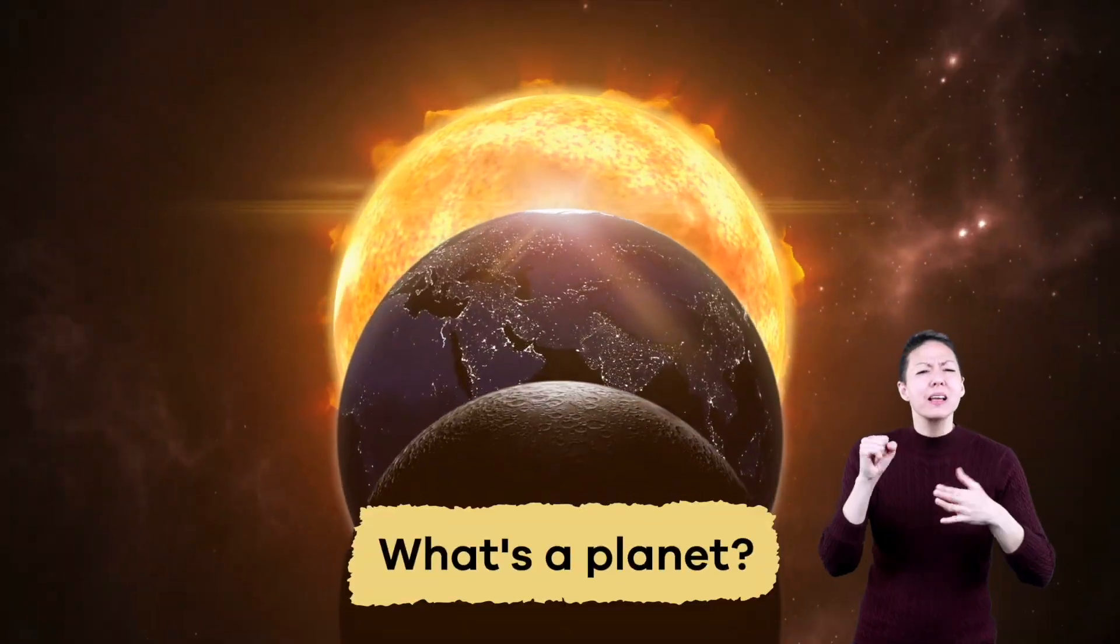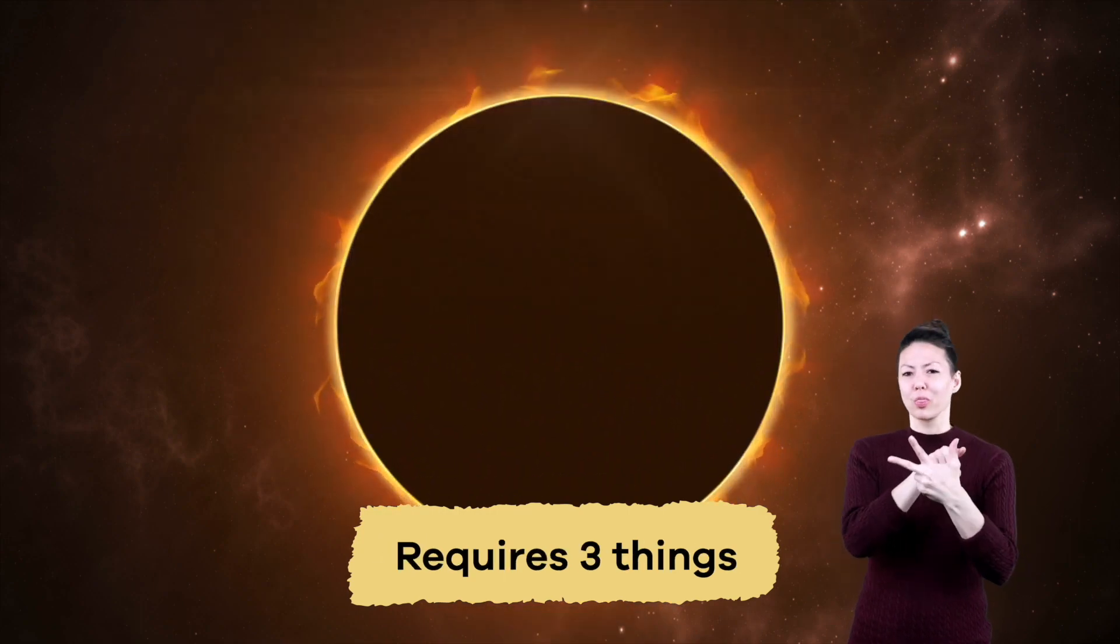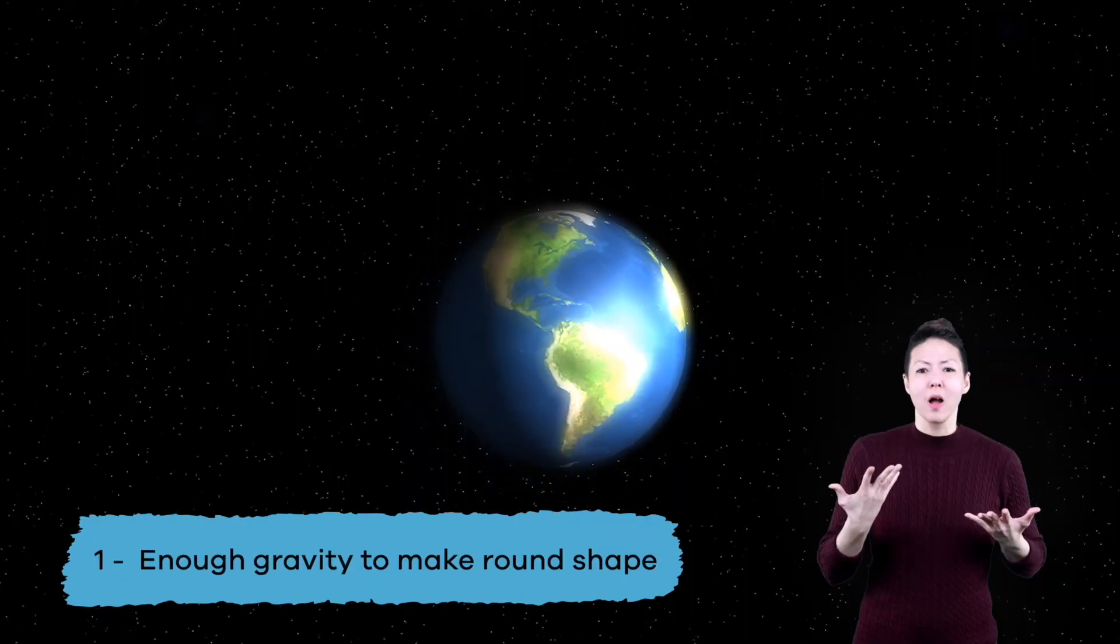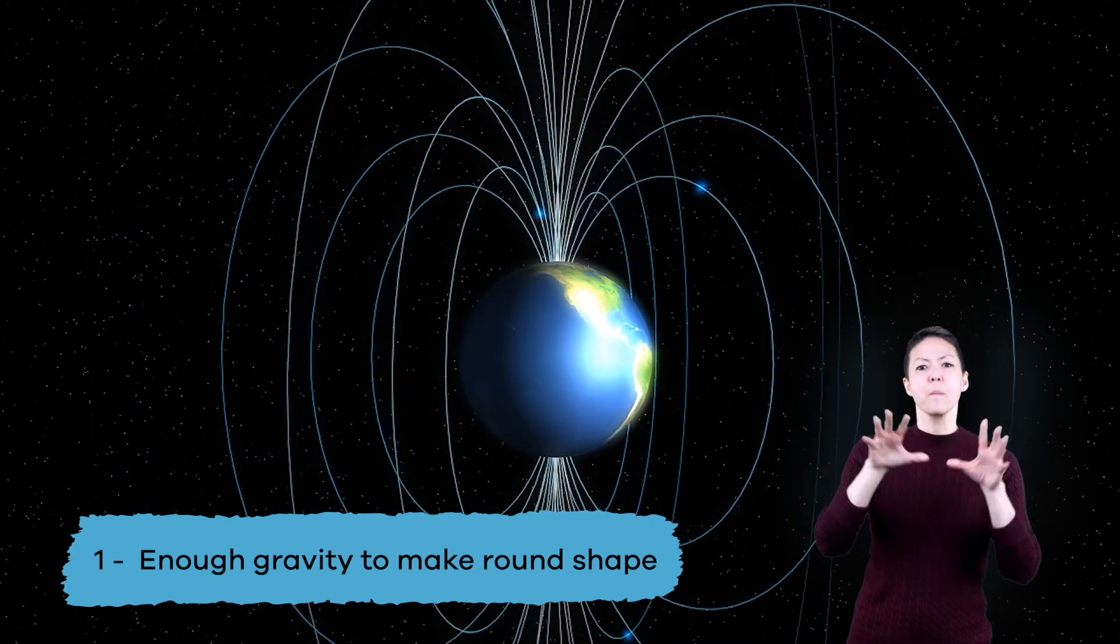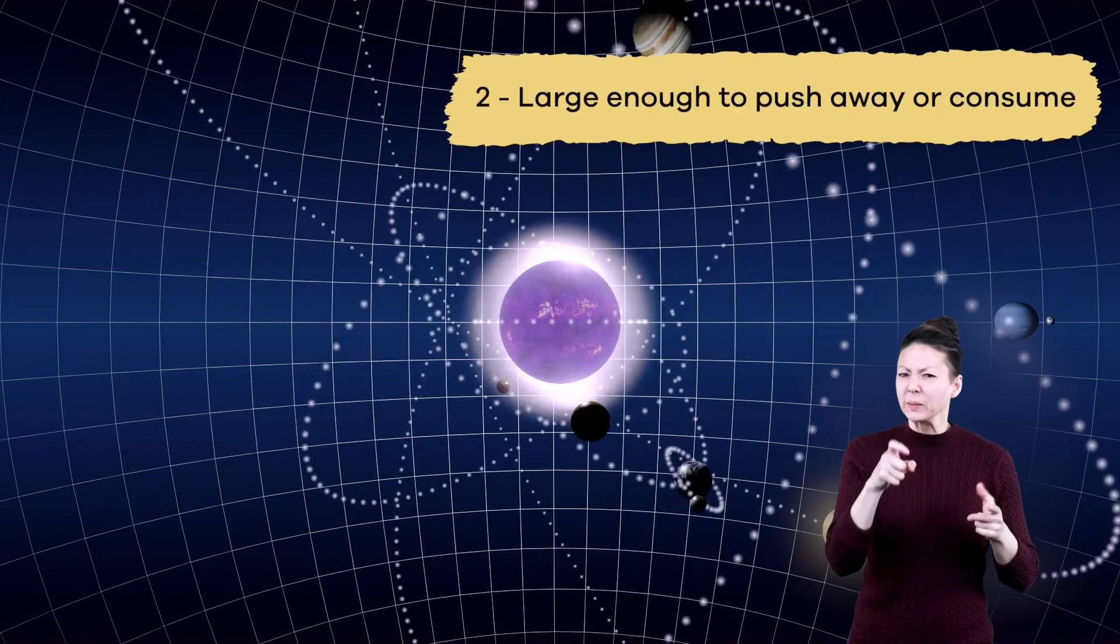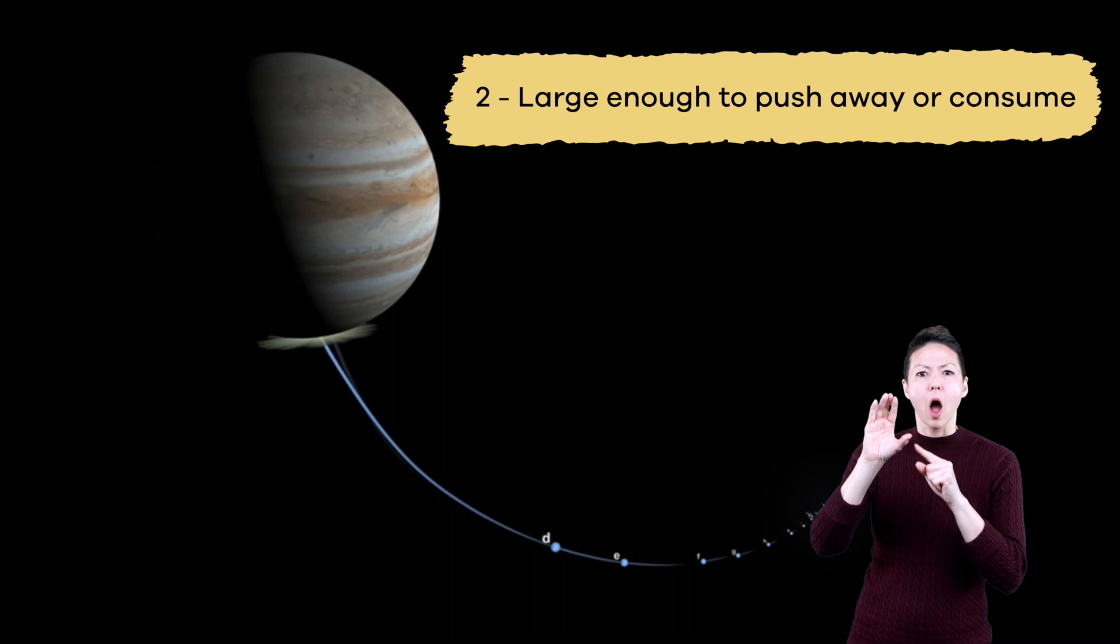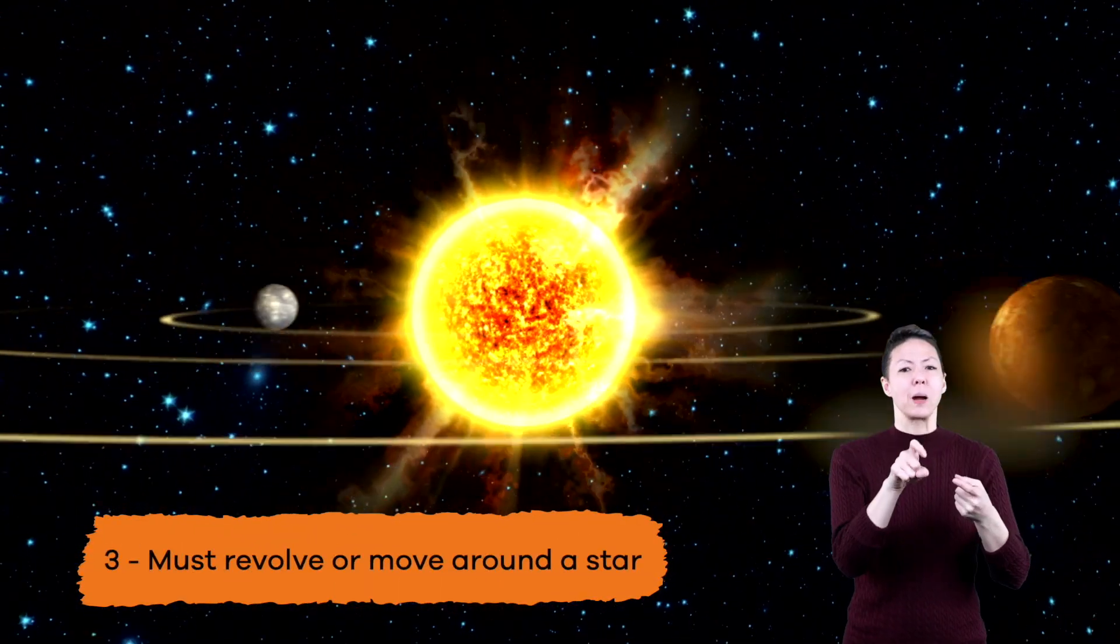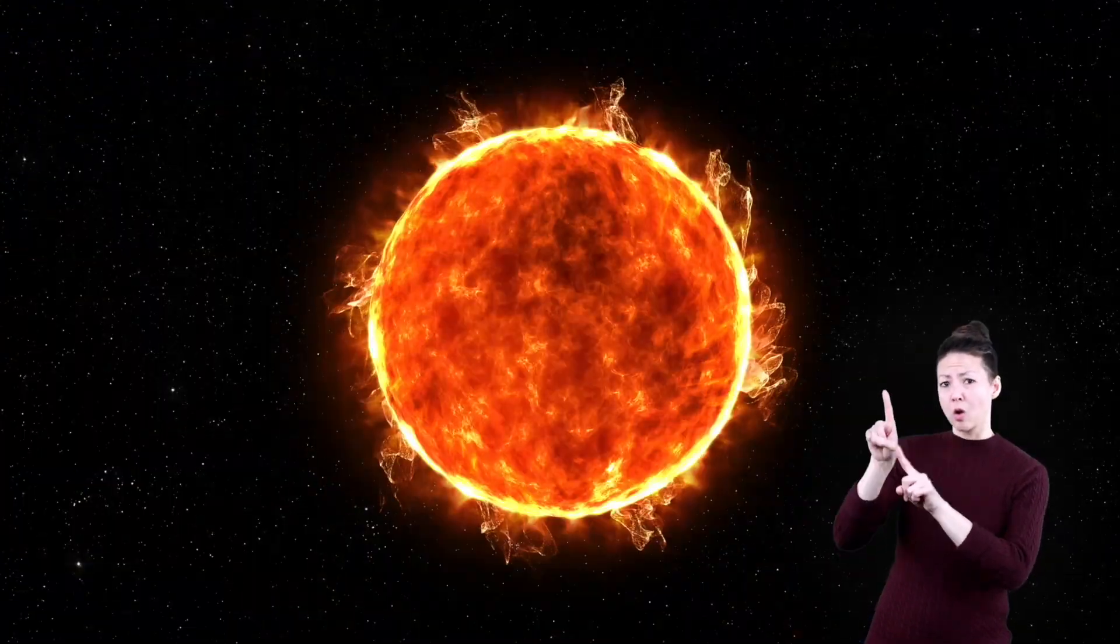So, what's a planet? To be considered a planet requires three things. One, it is a large object with enough gravity to pull itself into a round shape. Two, it must be big enough to push away or consume other objects in its path. And three, it must revolve or move around a star. In our solar system, that star is the sun.